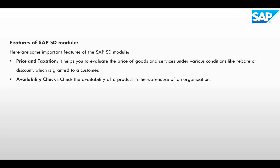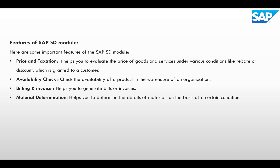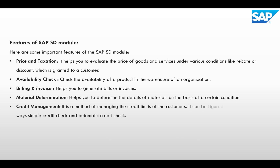Another important feature is Availability Check — checking the availability of the product in the warehouse of an organization. When we create sales orders in the SAP SD process, we check the availability of the material so that we can complete the sales order process. Then Billing and Invoice — it helps us to generate bills or invoices against customers. Material Determination helps to determine the details of material based on certain conditions.